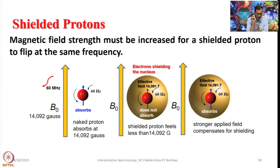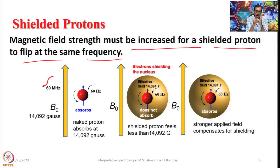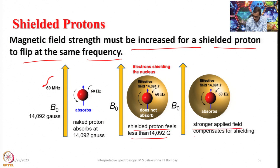The magnetic field strength must be increased for a shielded proton to flip at the same frequency. For example, if a nucleus is at 2 tesla or 14,092 gauss, the electrons generate an induced magnetic field that opposes it, so the net magnetic field experienced by the nucleus drops and its precession frequency also drops. In that case, we have to use a different frequency to cause flipping, or we can increase the applied magnetic field strength to compensate. Two ways are available: either decrease the Larmor frequency or increase the applied field to compensate for shielding.